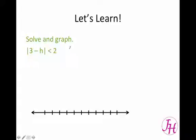So that means on either side of 0, it's less than 2 units away. So we can say that negative 2 is less than 3 minus h, which is less than 2, because 3 minus h is less than 2 units in either direction.